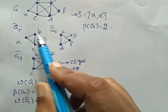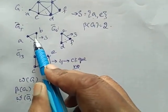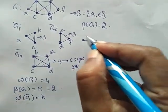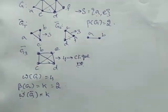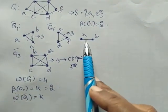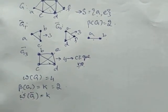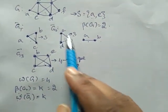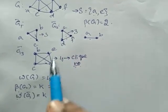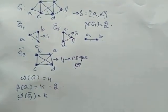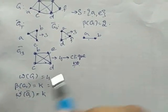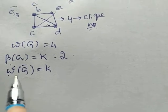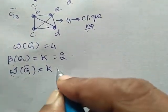If we consider the clique of G bar, only two vertices exist, such as A,B or B,C or A,C — this is a complete graph where A is connected to B and B to A. In G2 also, we can consider only one edge in this subgraph. Therefore ω(G bar) is 2.